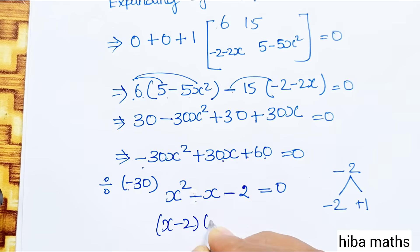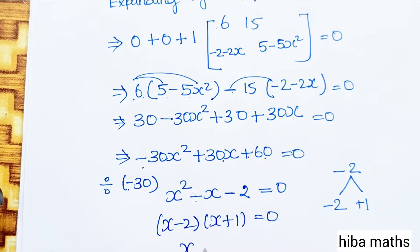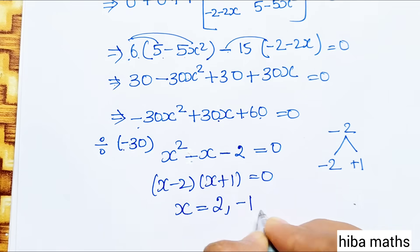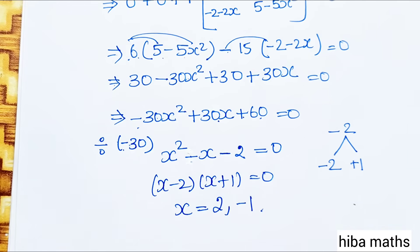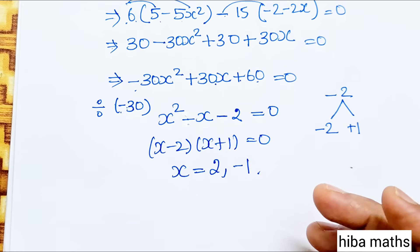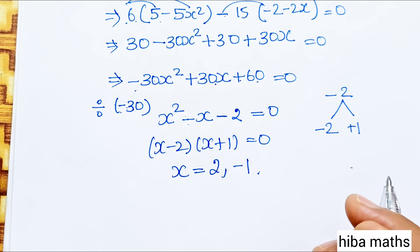Factoring: (x − 2)(x + 1) = 0. Therefore x = 2 or x = −1. These are the roots of the equation.